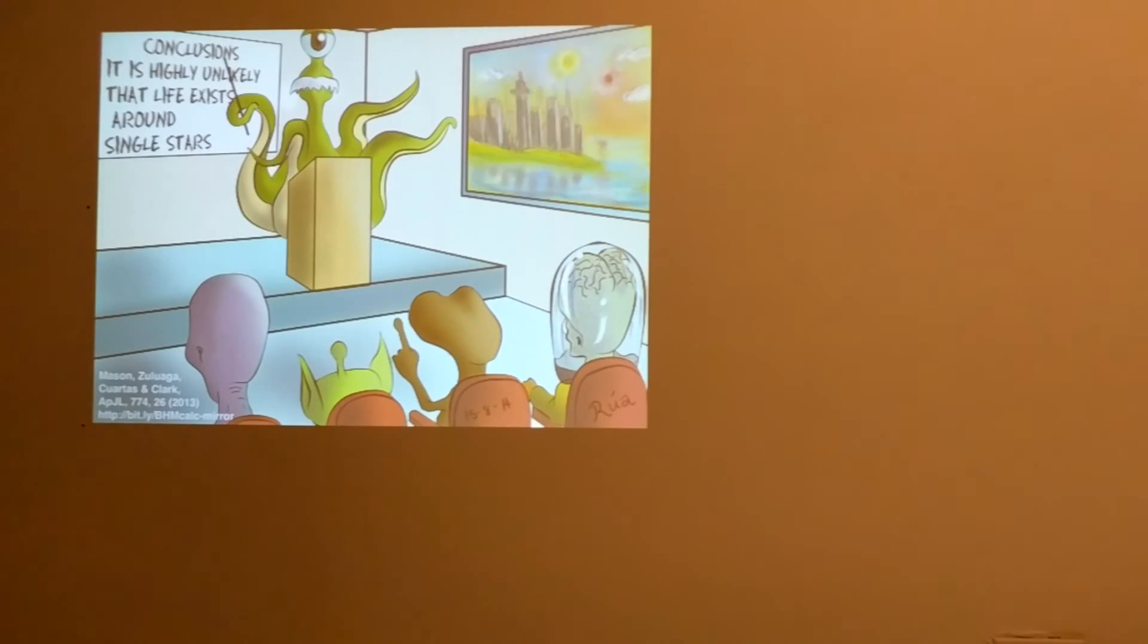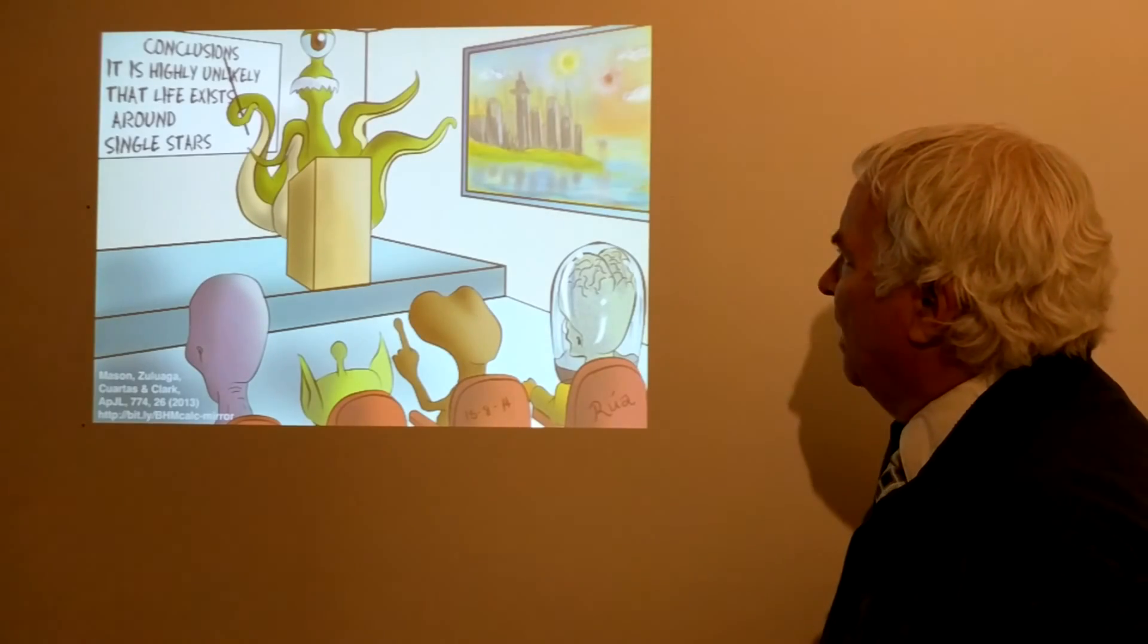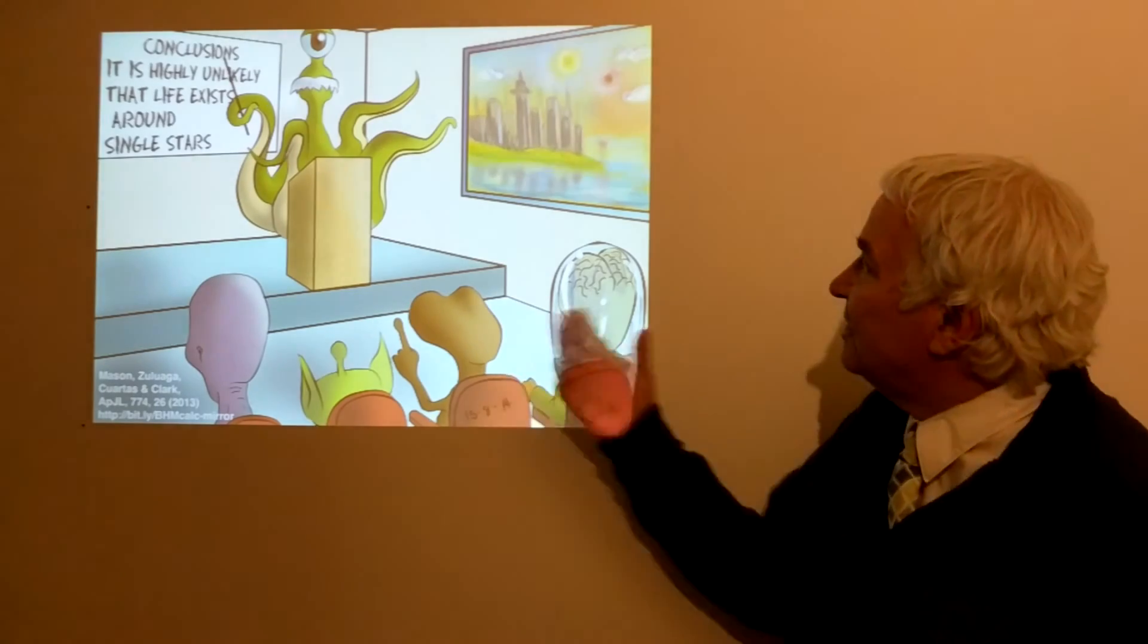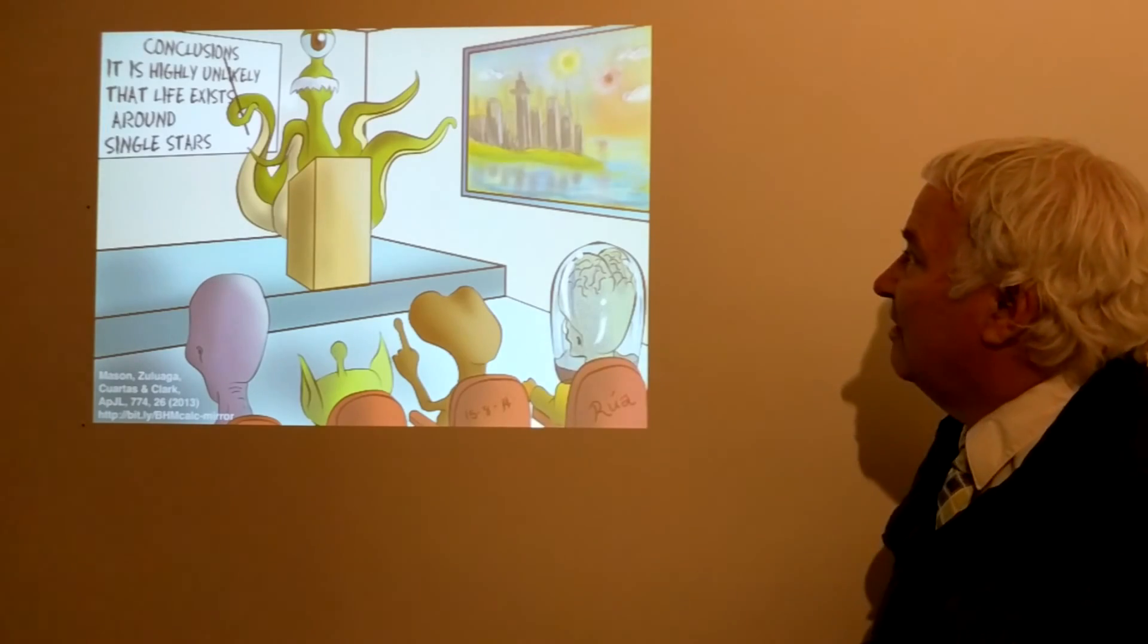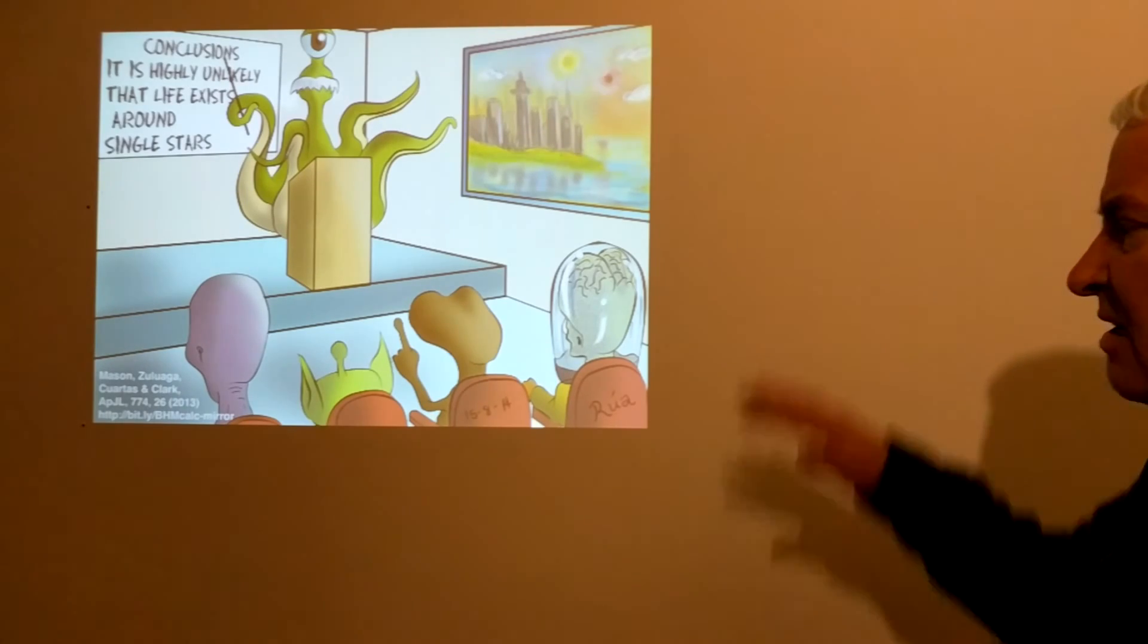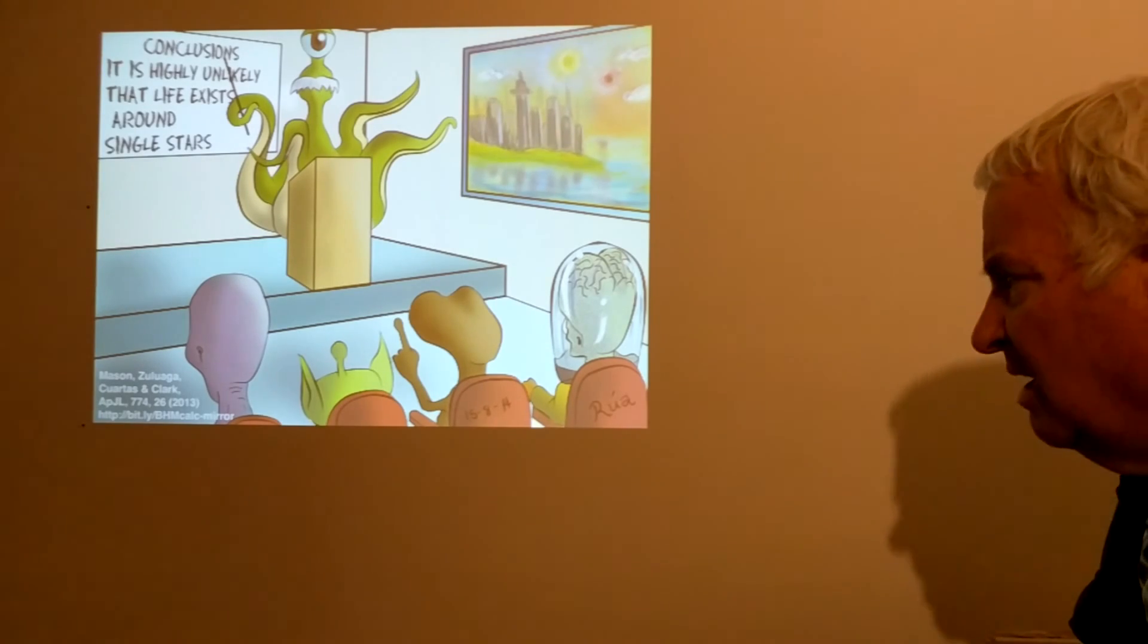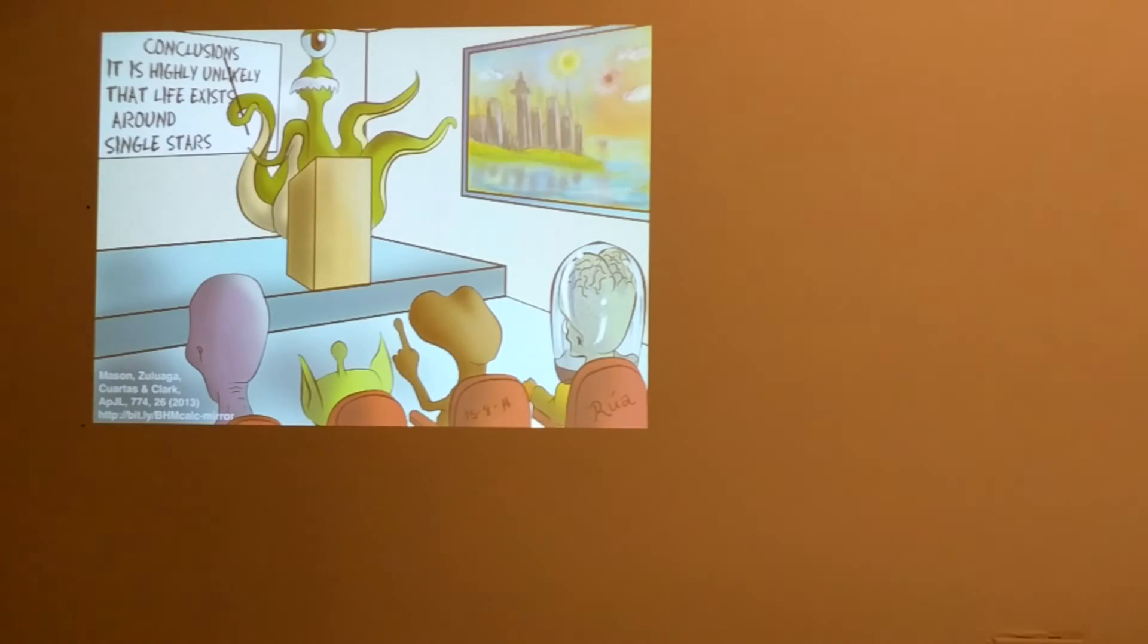So who knows - maybe somewhere there is a scientist that is coming to a conclusion on this planet, which is obviously orbiting a pair of stars in a binary system. And maybe they could conclude it's highly unlikely that life exists around single stars. And so when we say, maybe it's unlikely that life exists around binary stars - well, we could consider the alternative case here. And these results were proposed by myself, Mason, Zuluaga, Quartas and Clark in 2013, and the reference is given there.